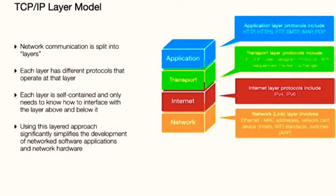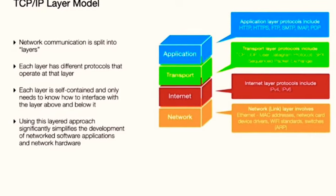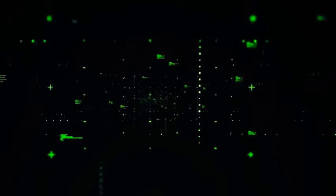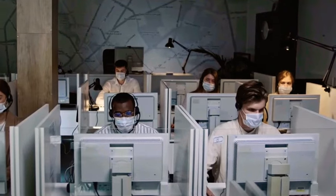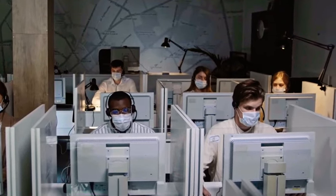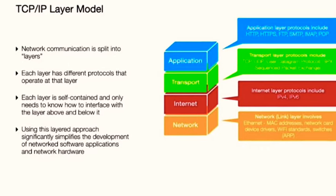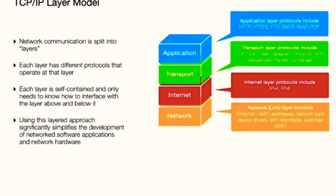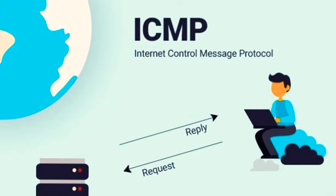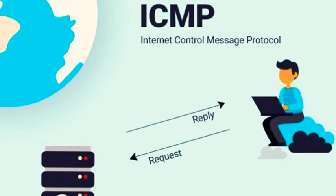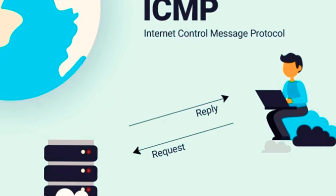Moving up, we reach the internet layer — the postman of the internet, responsible for routing data packets. It's like a GPS system figuring out the best route for data to travel from the source to the destination. Key protocols operating at this layer include the Internet Protocol, or IP, which assigns unique addresses to each device on the network, and the Internet Control Message Protocol, or ICMP, which handles errors and exchanges information about network conditions.